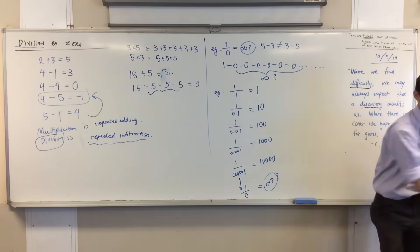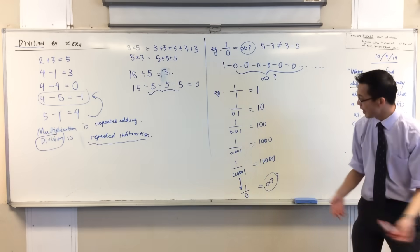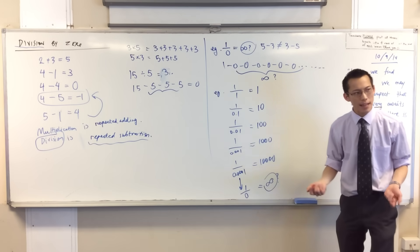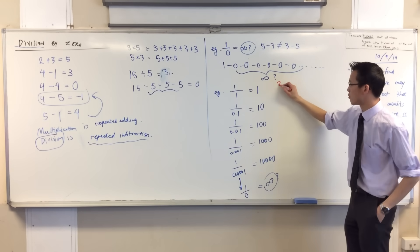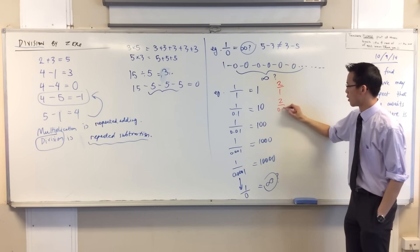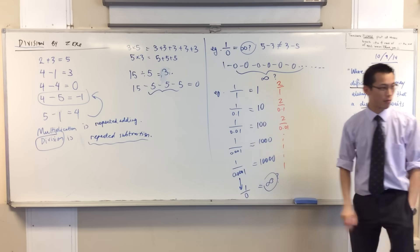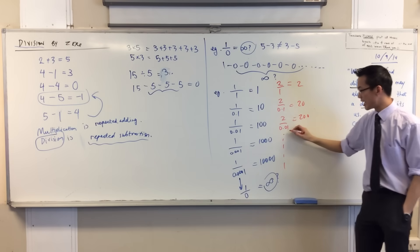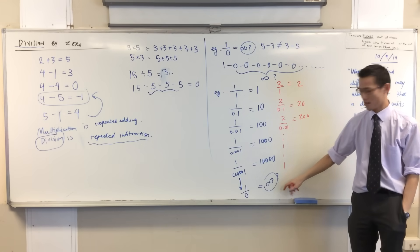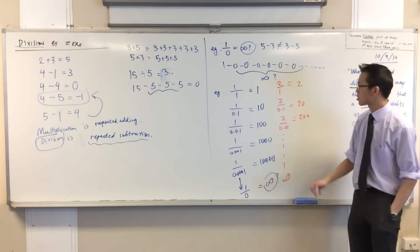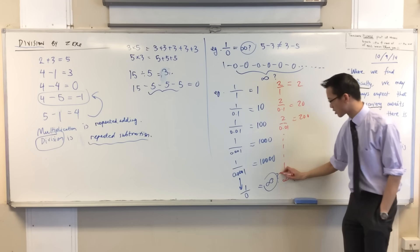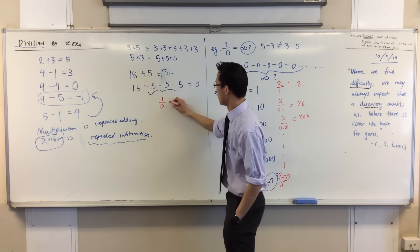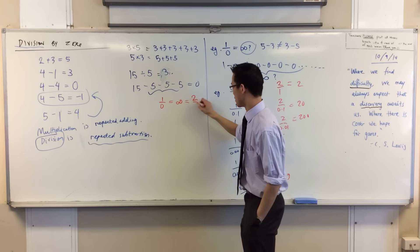But this problem is a big problem. And the problem is, you know this game that I played here with one divided by something and then divided by other things and so on? I can play it with other numbers too. For instance, I could do it with two. Two over 0.1, two over 0.01, and so on. Now all of your numbers, they're gonna be twice the size. You're gonna get two and then 20 and then 200, but they're tending toward the same thing. They're tending toward infinity. So that means this is where this is going: two over zero.